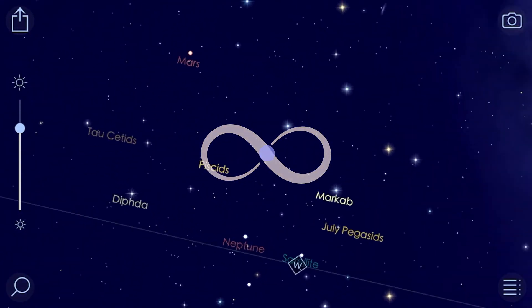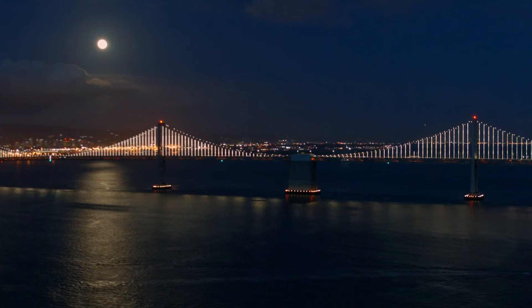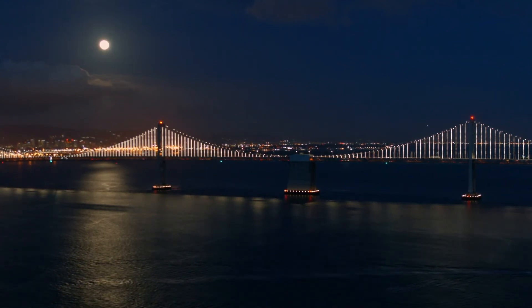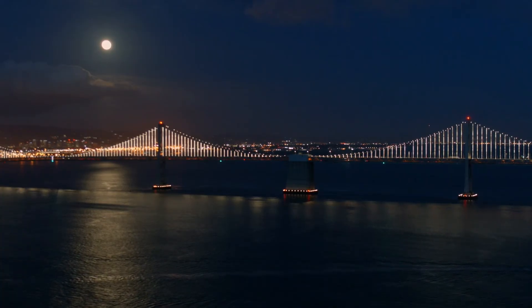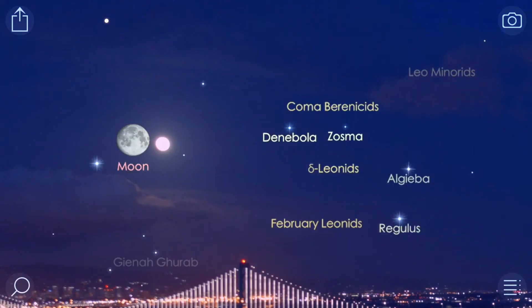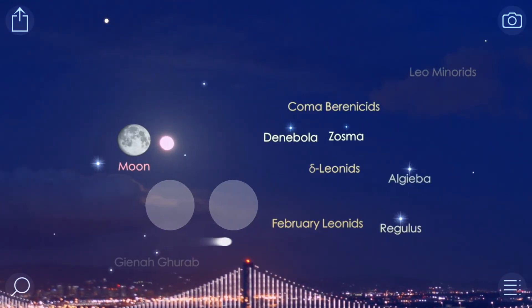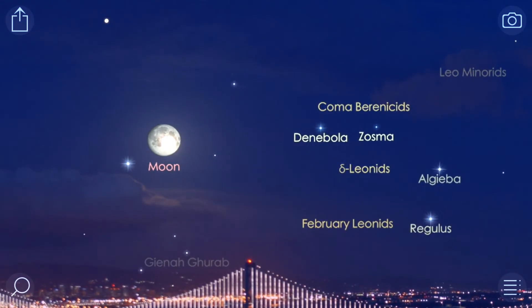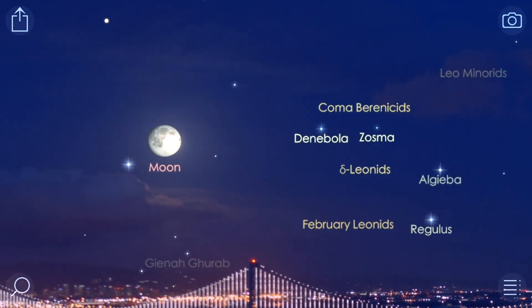If the problem remains, try manual calibration. Find a prominent and bright object in the sky above you, like the sun, the moon, Venus, or Jupiter. It's better to lower the magnitude in the app settings so that only the brightest objects are left on the screen.